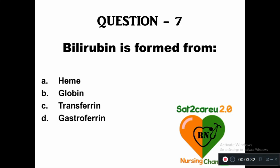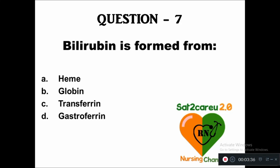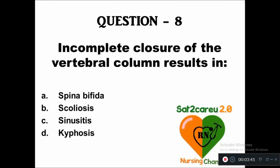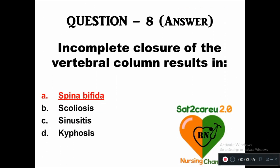Question 7: Bilirubin is formed from — A: heme, B: globin, C: transferrin, D: gastroferrin. The right answer is heme. Question 8: Incomplete closure of the vertebral column results in — A: spina bifida, B: scoliosis, C: sinusoidal arthritis, D: kyphosis. The right answer is spina bifida.